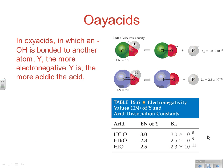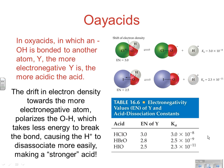An oxyacid is a substance with oxygens bonded to it that's acting like an acid. In oxyacids in which there is an OH bonded to another atom Y, the more electronegative Y is, the more acidic the acid is. Increasing electronegativity increases polarizability — it causes a shift in the electron cloud, exposing that hydrogen and polarizing the OH bond. That means it takes less energy to break the hydrogen off, causing H⁺ to dissociate more easily and creating a stronger acid.